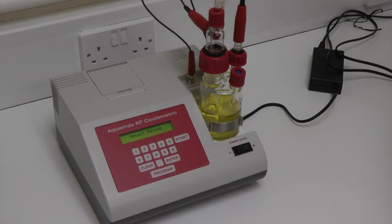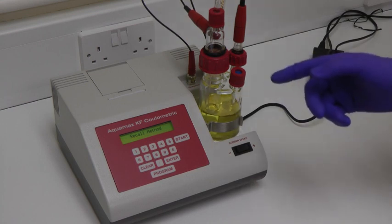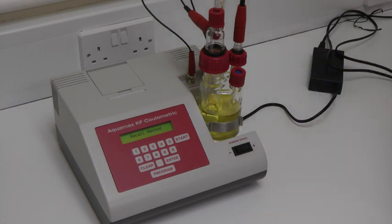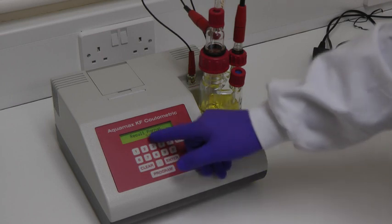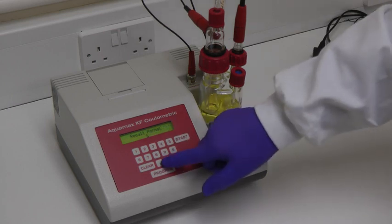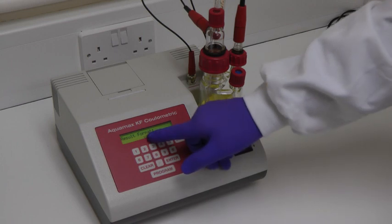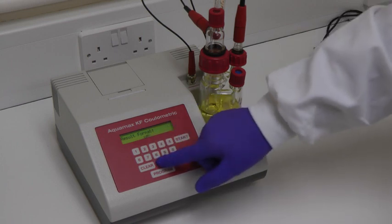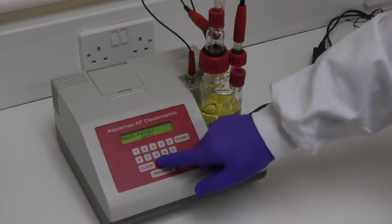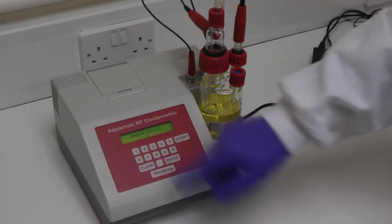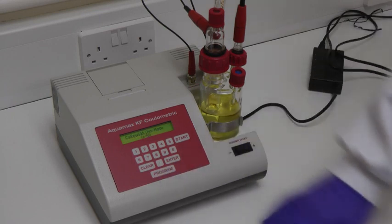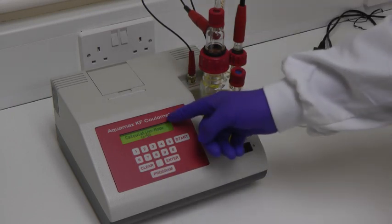The second parameter is Recall method. Methods can be stored in memory to avoid reprogramming from scratch. The next parameter is Result Format. Pressing the decimal point will cycle the format through microgram, ppm, milligrams per kilogram, and percentage. Press enter to select the required format, and then enter again to move to the next parameter.